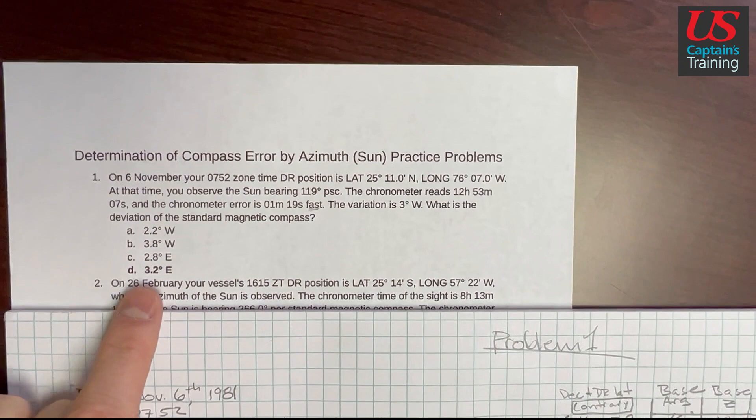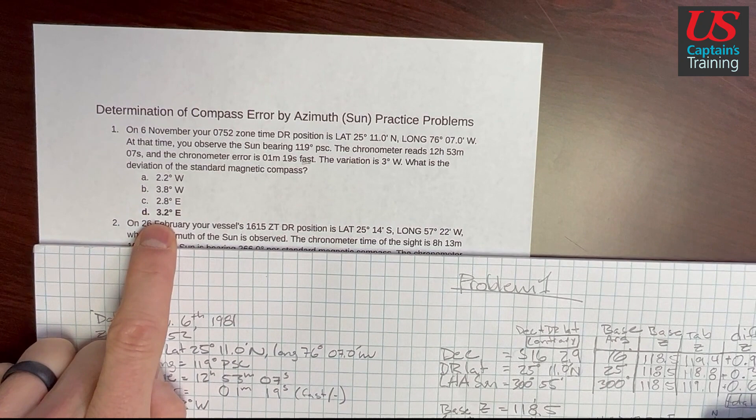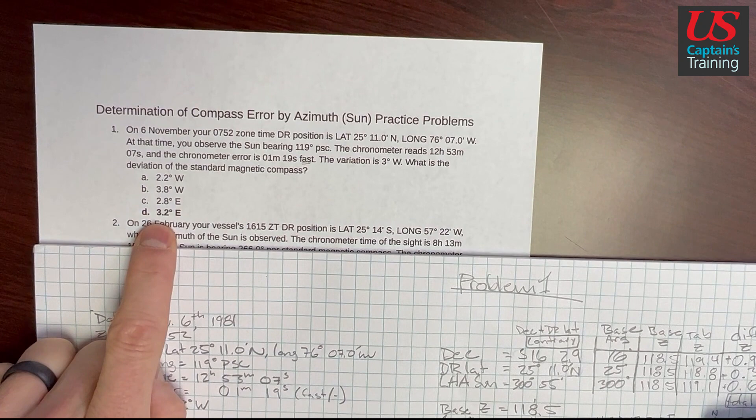We did it. You can actually do these problems. 3.2 east is the answer to Determination of Compass Error by Azimuth of the Sun, Practice Problem 1.